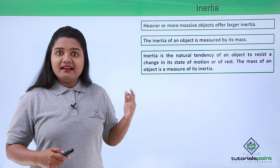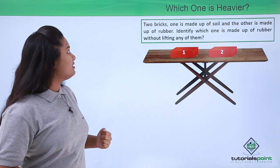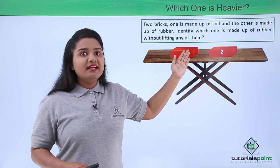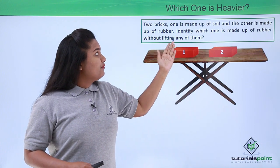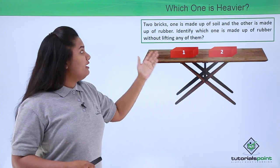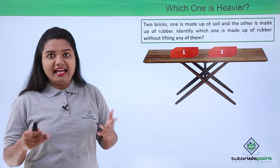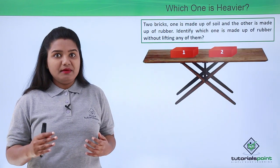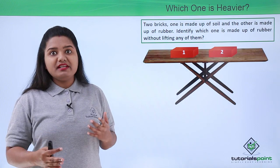Based on what we have learned, let us answer a simple but tricky question. There are two bricks: one made of soil and the other made of rubber. They look exactly the same. Can you identify which one is made of rubber without lifting either of them? If we were allowed to lift them, we could easily tell which is which, but we are not allowed to do that.